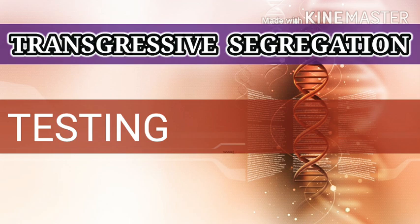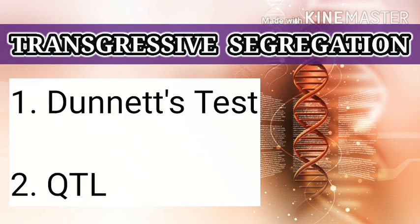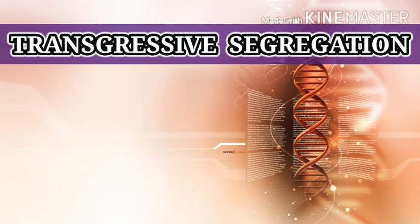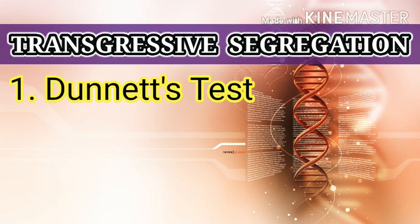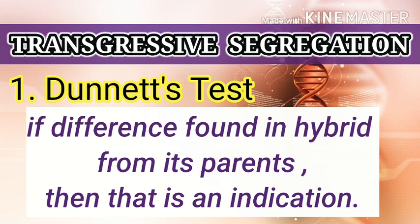There are two methods: one is the Danitz test and the second is the QTL test. In the case of the Danitz test, if the hybrid species' performance was different from the control group, then that difference is an indication of transgressive segregation.